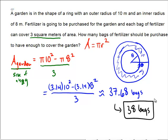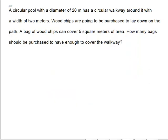Same philosophy. Try one on your own here. A circular pool with a diameter of 20 has a circular walkway around it that has a width of 2. Wood chips are going to be purchased to lay down on the path, and a bag of wood chips can cover 5 square meters of area. How many bags should be purchased to cover the walkway?